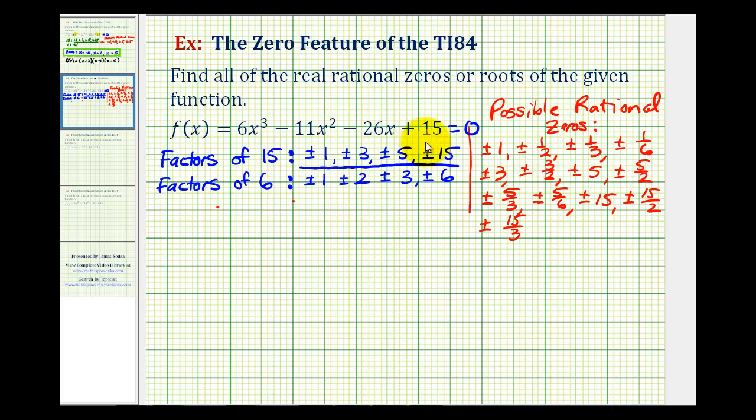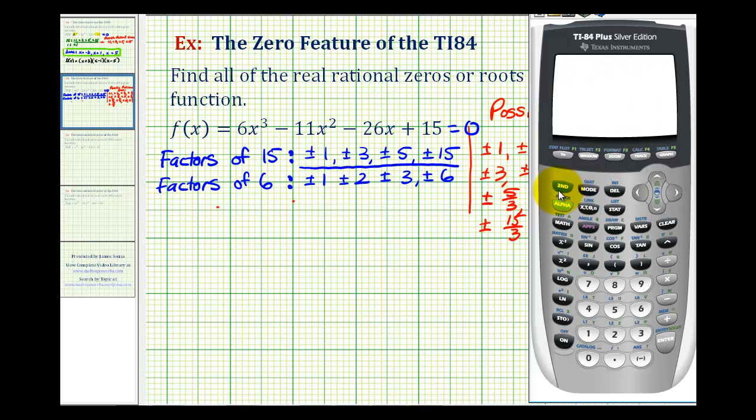So let's graph this function on our TI-84. From the home screen, we'll press y equals, clear out any old functions we have, and type in the new function. We have 6x³, here's the exponent key on the right, so there's 6x³ - 11, for the squared we can just push this x squared key here, -26x, and then +15. And to make sure we have the standard window from -10 to +10 along the x and y axis, let's go ahead and press zoom six.